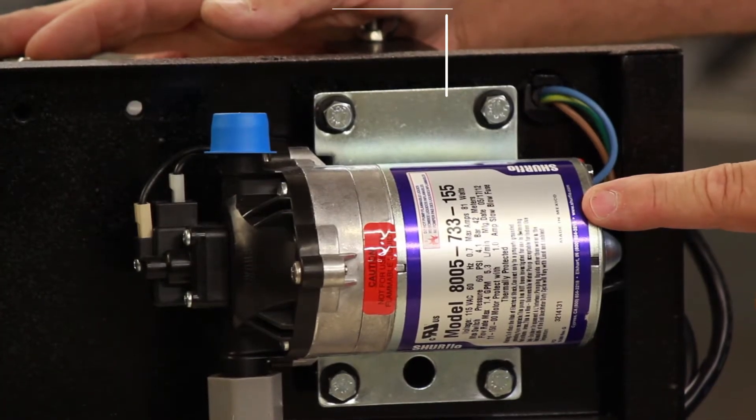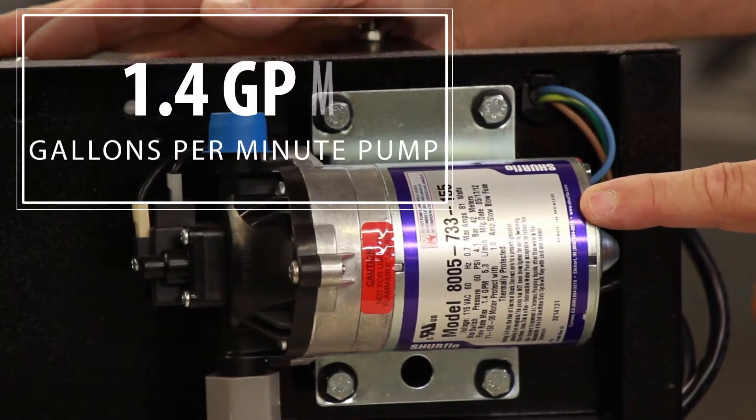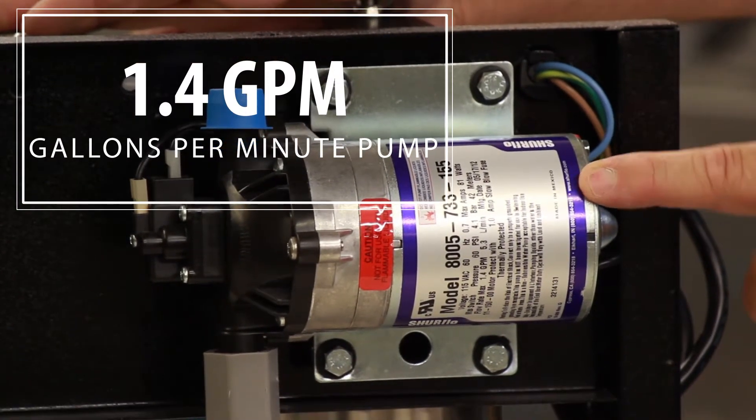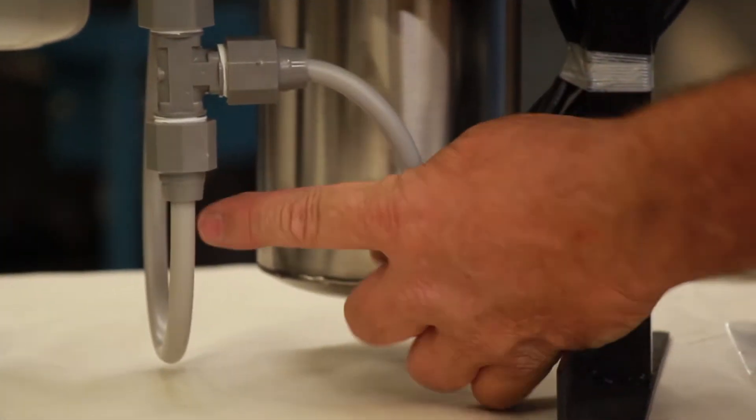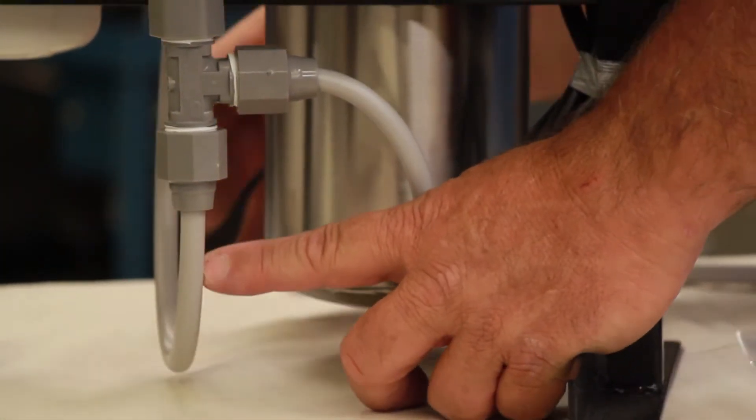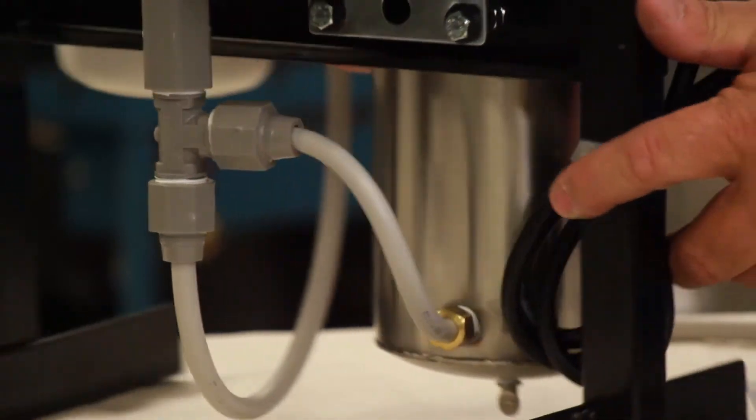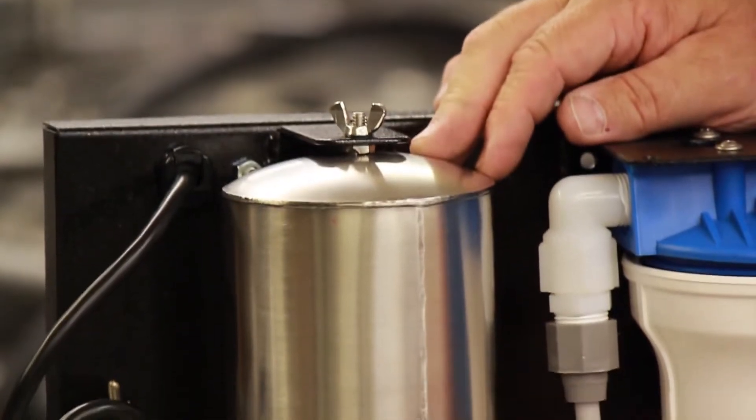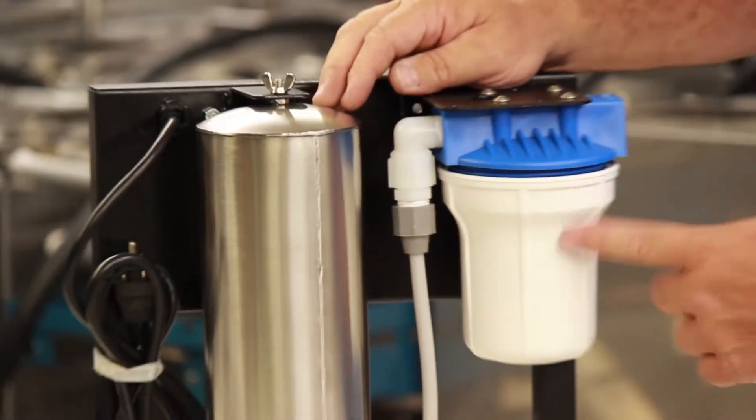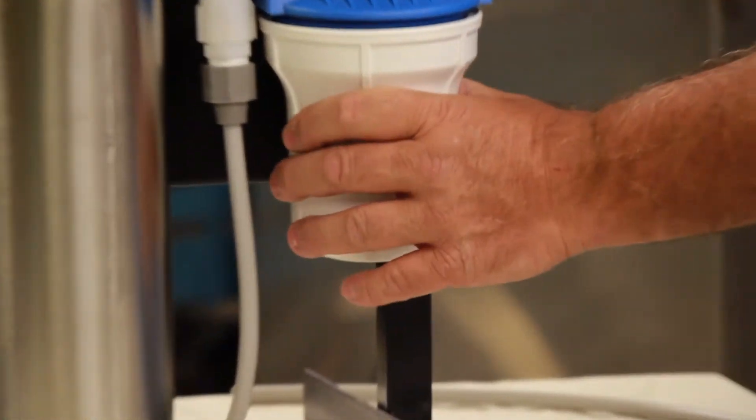This is a SureFlow pump that's 1.4 gallons per minute. This line is going into an accumulator. The accumulator keeps the water flowing smoothly, has an air gap, air cushion in it. The filter filters the water so it tastes wonderful.